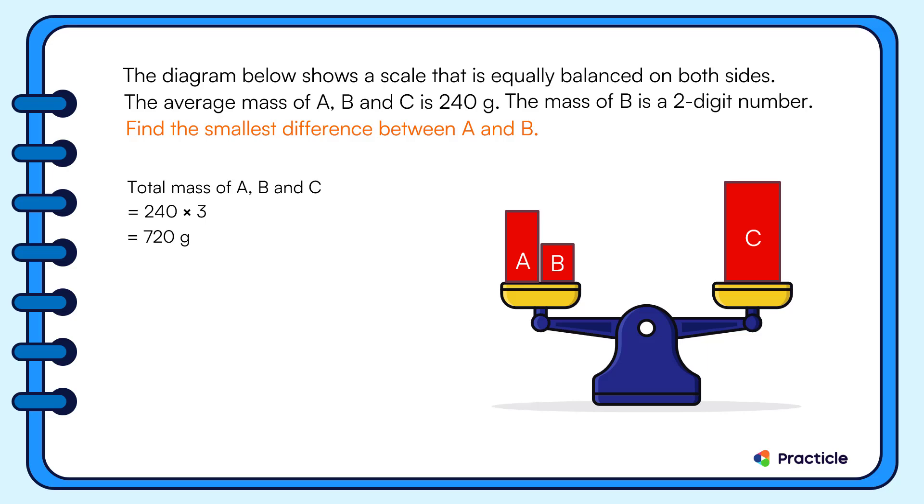What should we do next? Remember that A and B have the same mass as C? Since we know the total mass of the three items now, let's divide that by 2 to find the mass of A and B. When we divide 720 by 2, we'll get 360. And with that, we're halfway done. Good job everyone!